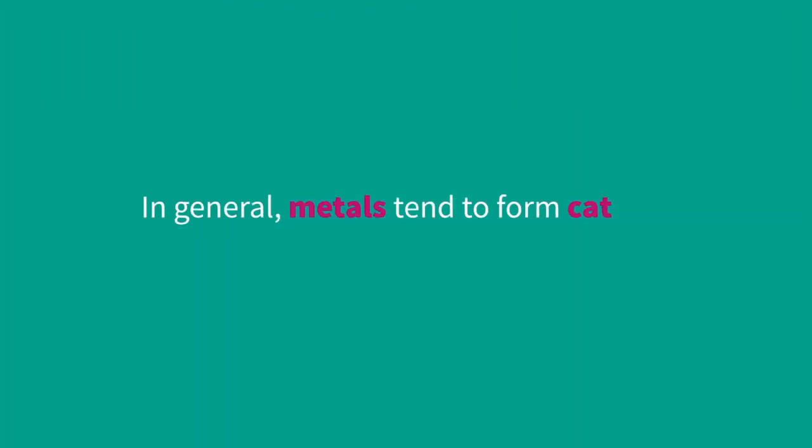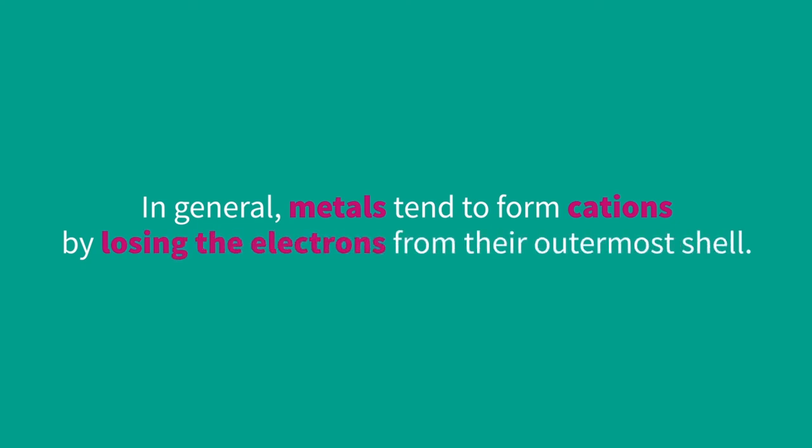In general, metals tend to form cations by losing the electrons from their outermost shell.